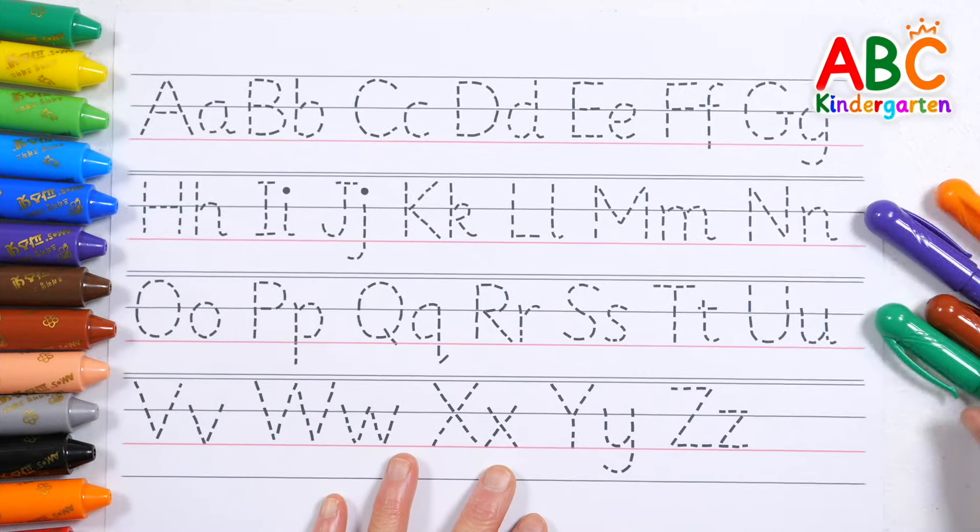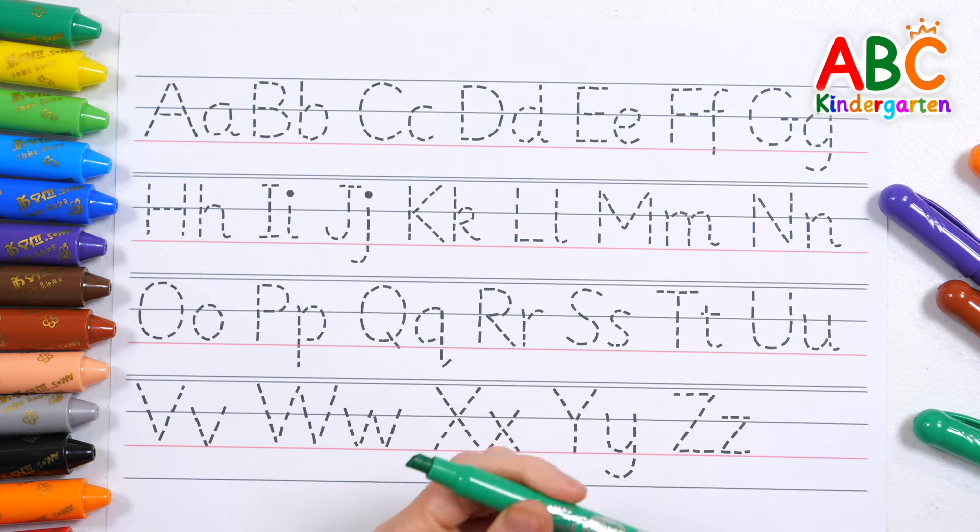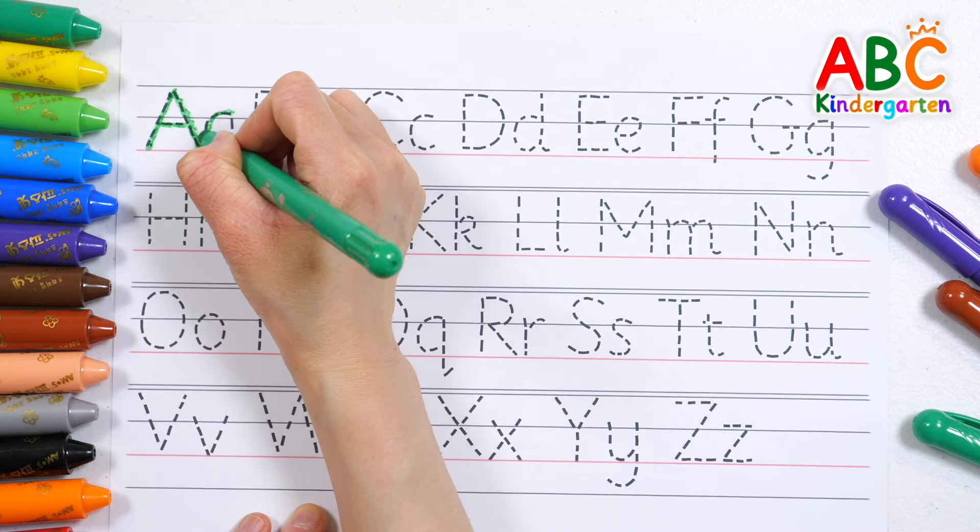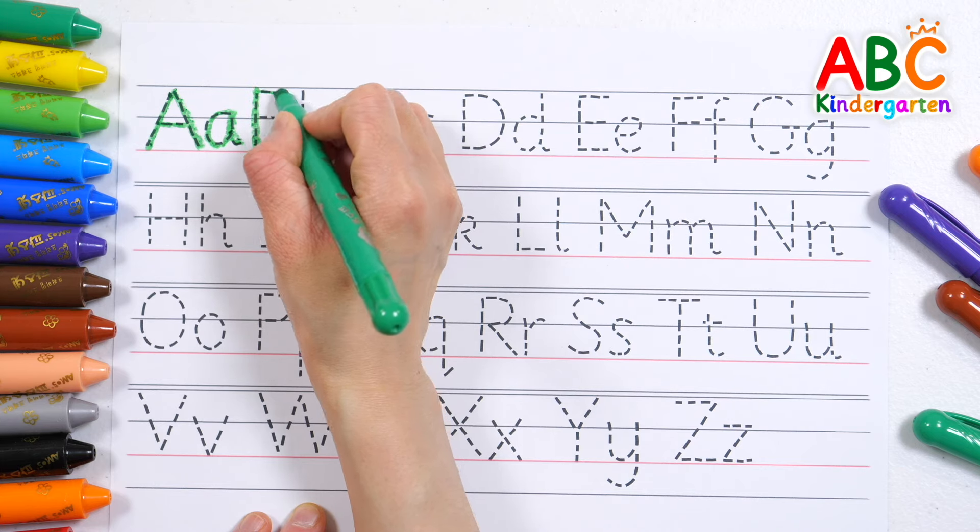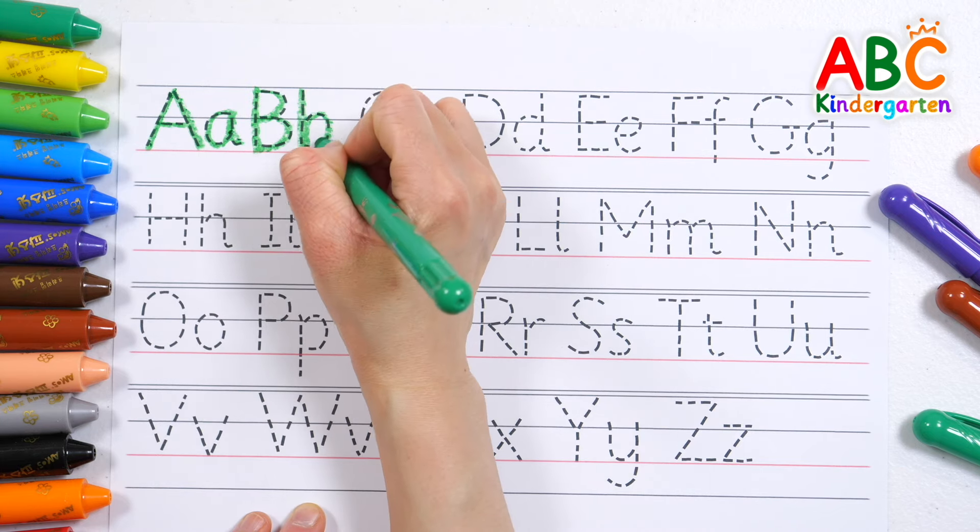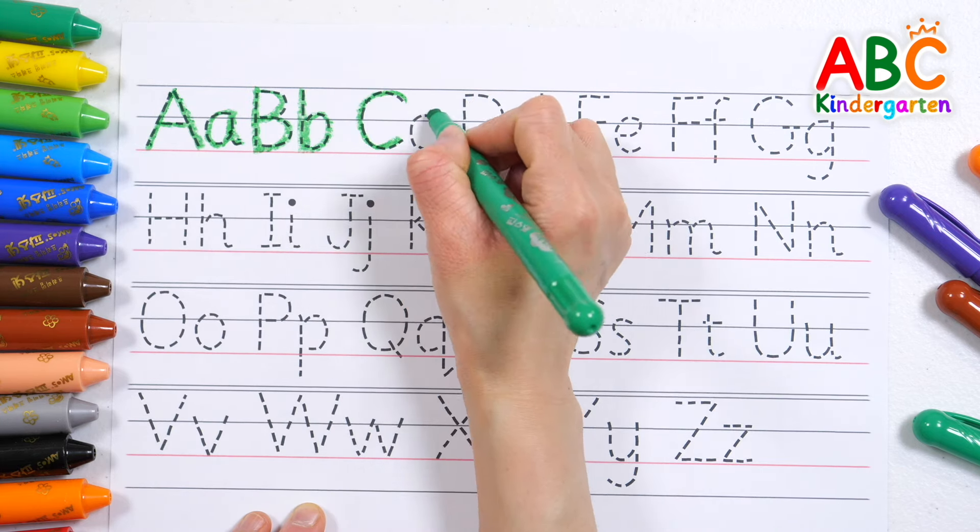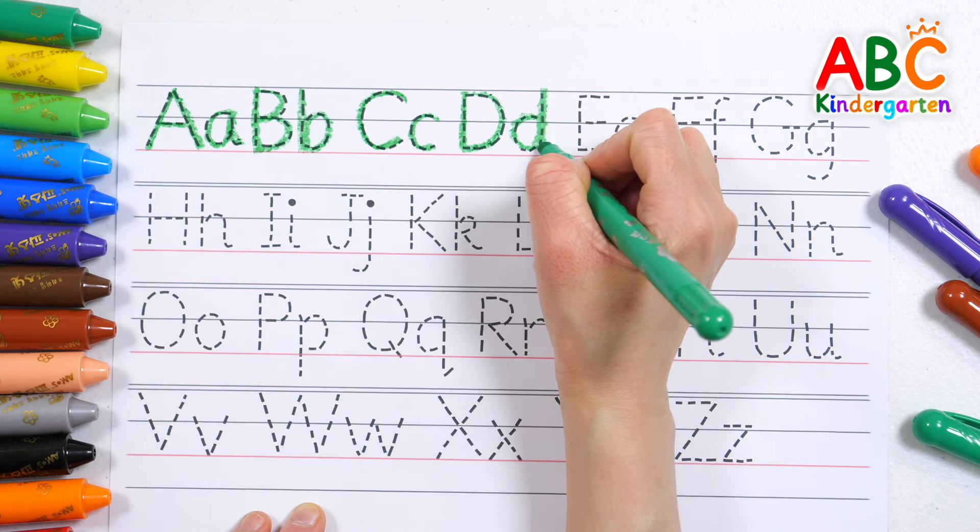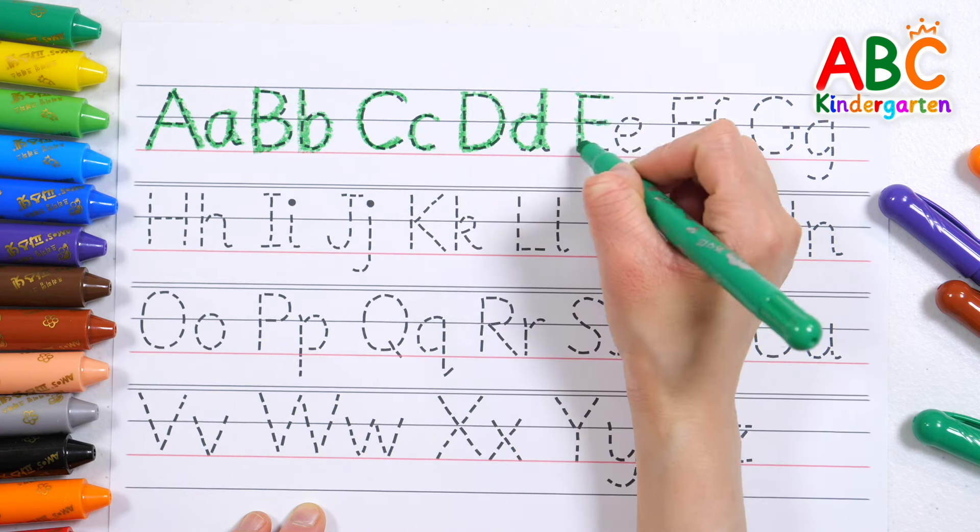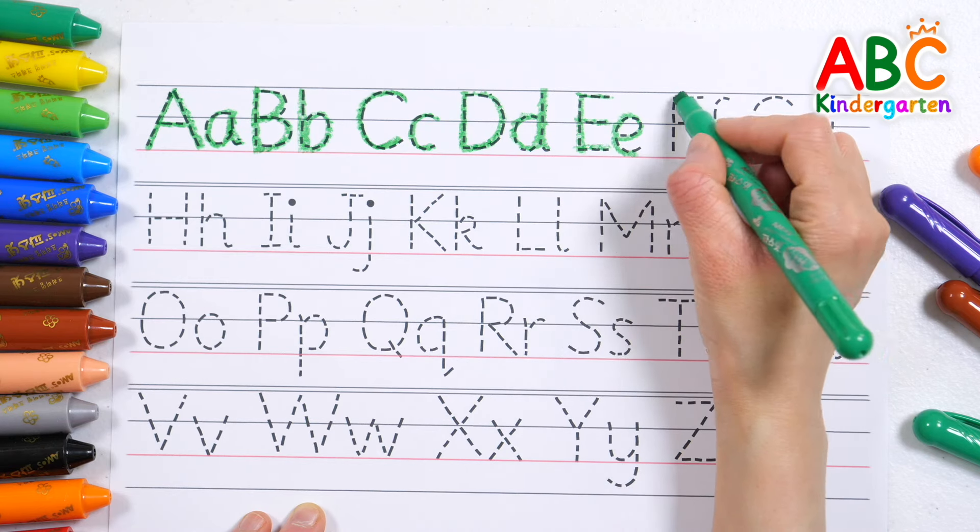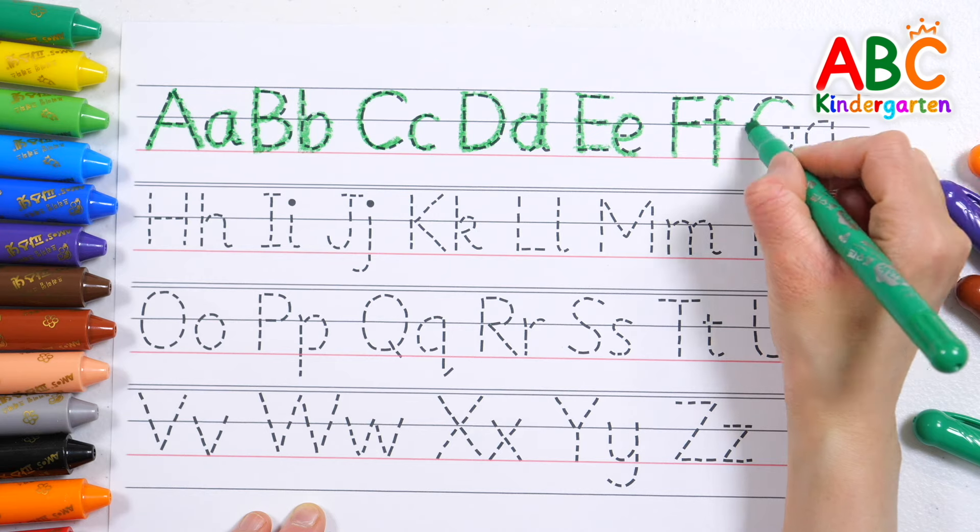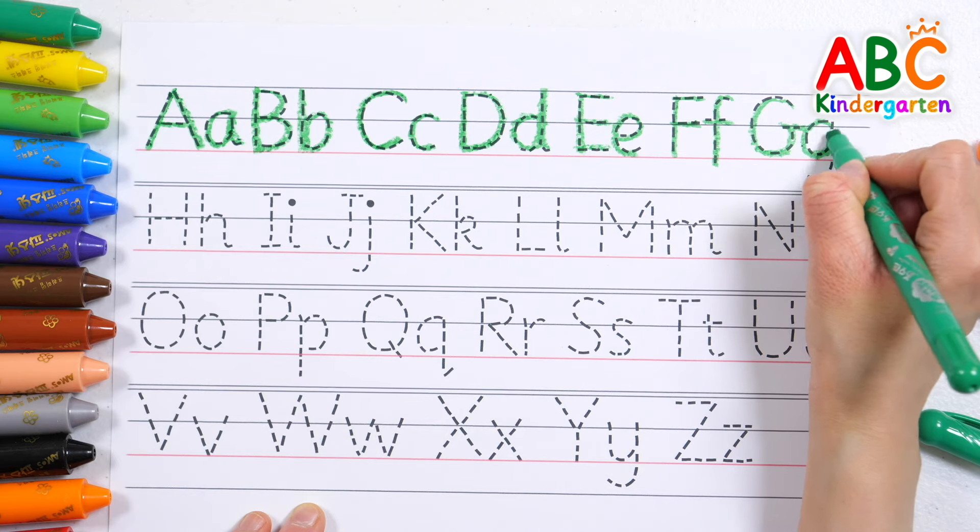Let's write the alphabet with four colored pencils. Write uppercase and lowercase letters together. A, B, C, D, E, F, G.